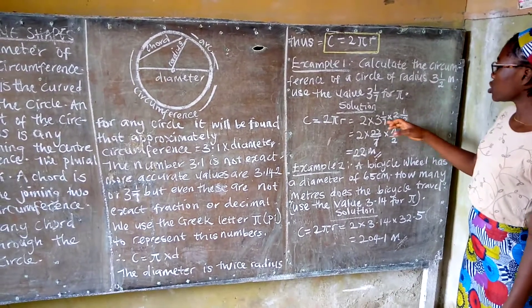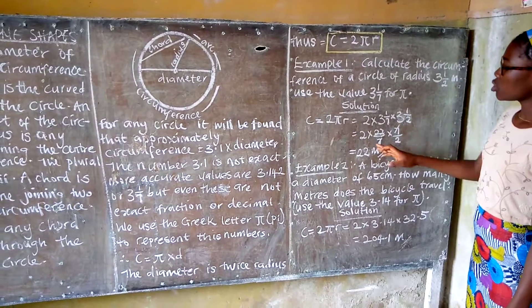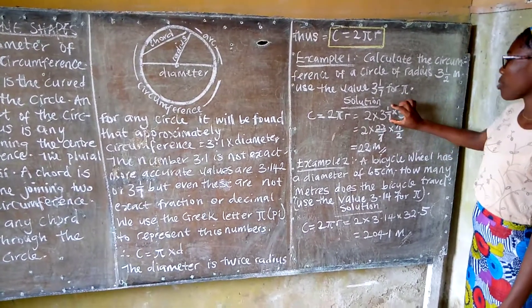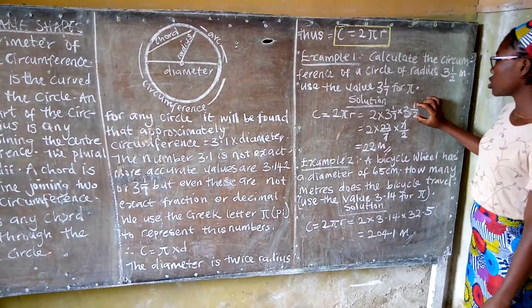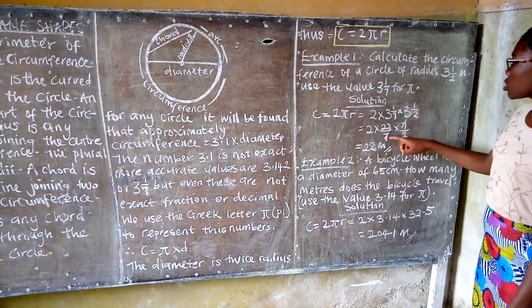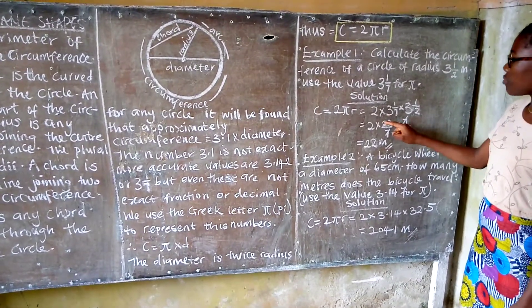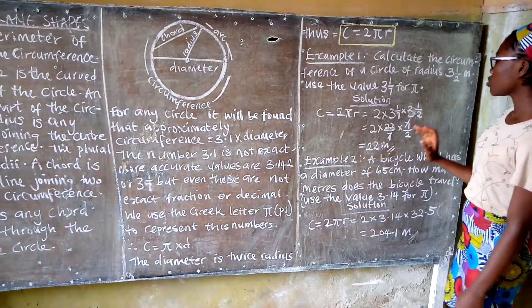Change this to improper fractions. So you have 2 × 22/7 × 7/2. Seven cancels with seven, then two cancels, leaving 11. So 2 × 11 is 22. The answer is 22 meters.